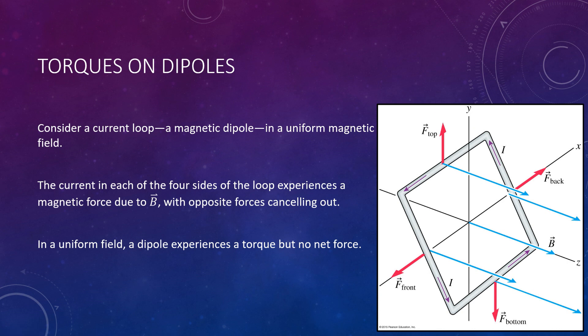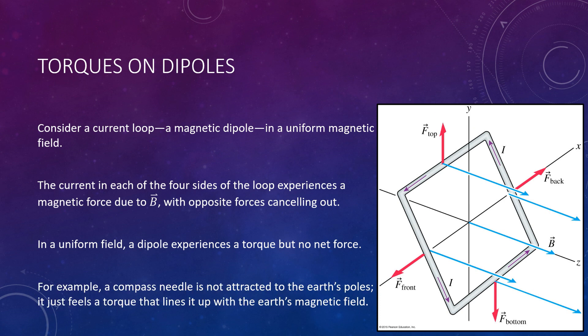However, it can rotate. This is free to spin around until it aligns with the magnetic field, so it could experience a torque even though its net force is zero. A good example: compare it to a compass needle. A compass needle is not physically attracted to the poles of the earth — if you let go of a compass needle, it's not going to go flying off toward the north or south pole. It's just rotating to align with the magnetic field. The same thing is happening here; it's going to rotate and pivot until it aligns with the field.